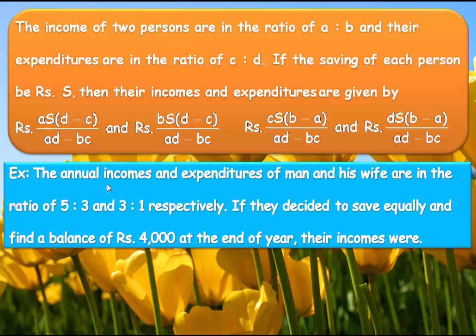Given that the ratio of incomes of the man and his wife is 5:3, and the ratio of expenditures is 3:1. They decided to save equally. They found a balance of Rs. 4,000 after a year, which means 4,000 is the total savings of both persons. So each person's saving is Rs. 2,000.